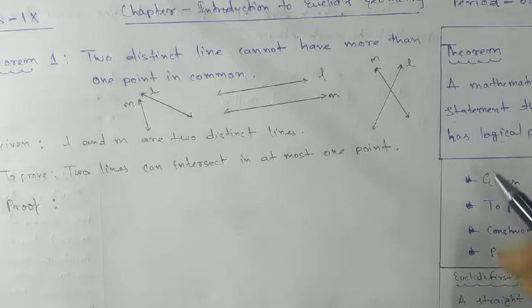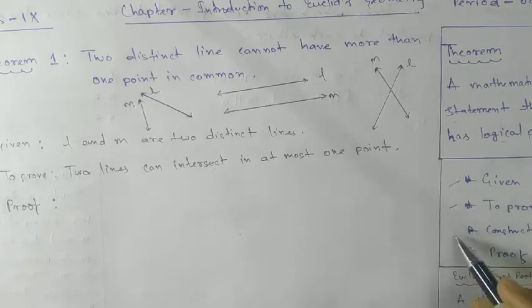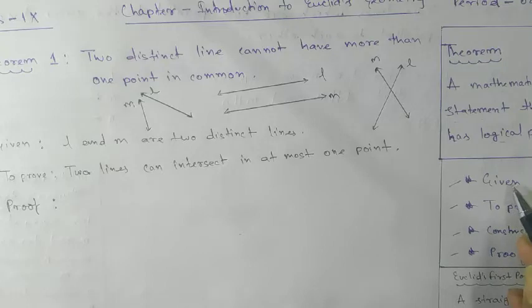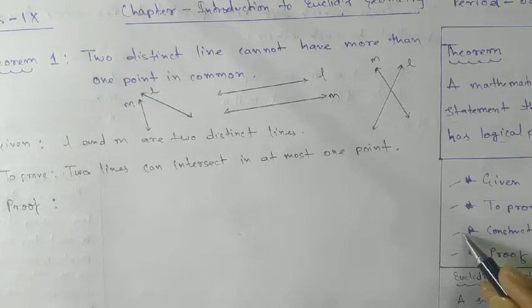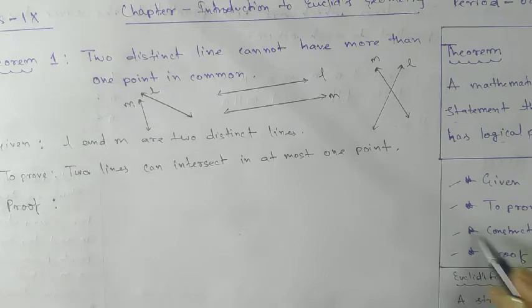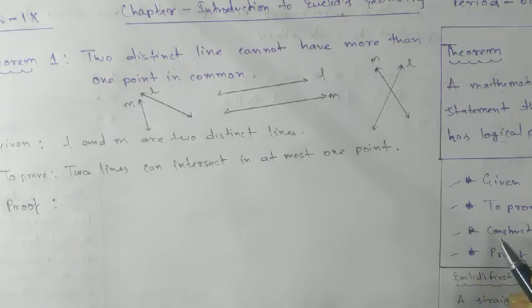To prove a theorem, you need four steps: Given, To Prove, Construction, and Proof. Construction is an optional step — sometimes we need to construct a figure to prove a theorem, and sometimes we do not.